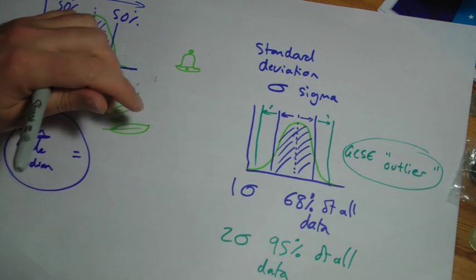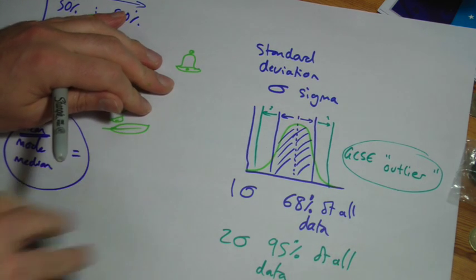So that's all standard deviation is: a measure of how spread out your data is compared to your mean average. And we'll take this on in the next idea and look at how to calculate standard deviation.